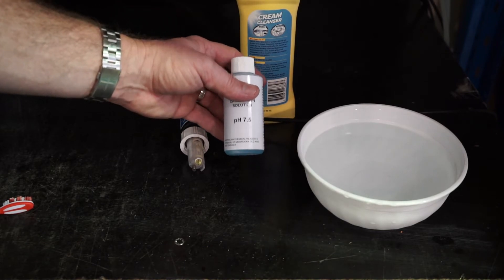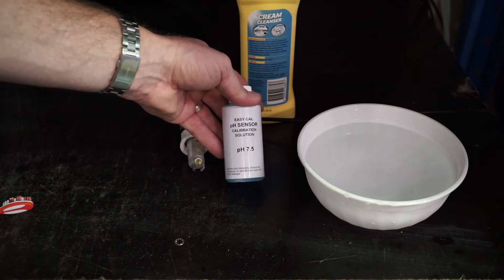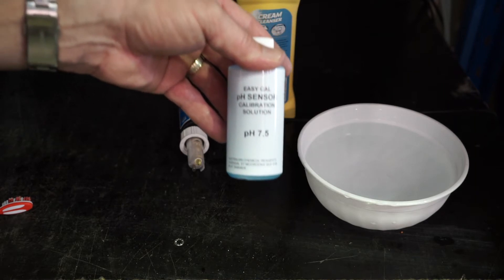After we've finished our clean, what we're going to do now is do a pH calibration. This is our pH calibration solution. It is factory set to 7.5 value.